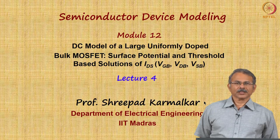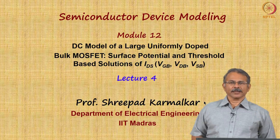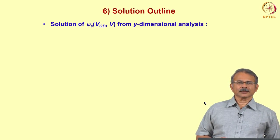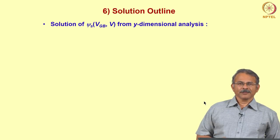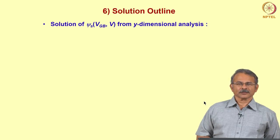Let us begin our fourth lecture on surface potential and threshold-based solutions of the drain to source current. First, we will summarize the key results of the previous lecture. In the previous lecture, we got a solution of the surface potential ψs as a function of gate to bulk voltage and channel voltage from y-dimensional analysis.